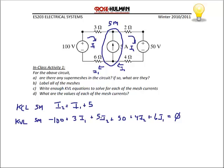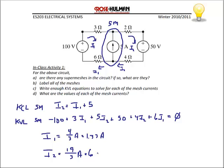That gives two equations and two unknowns. Solving for I1, we get I1 equals 4/3 amps, or 1.33 amps. And I2 equals 19/3 amps, or 6.33 amps.